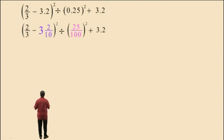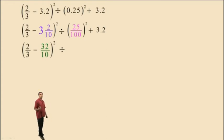So here we have parentheses in the beginning. We have 2/3 subtract 3 and 2/10. We're going to take care of that. First of all, we're going to change that mixed number into an improper fraction. Remember, 10 times 3 is 30. 30 plus 2 is 32. So we have 32/10.